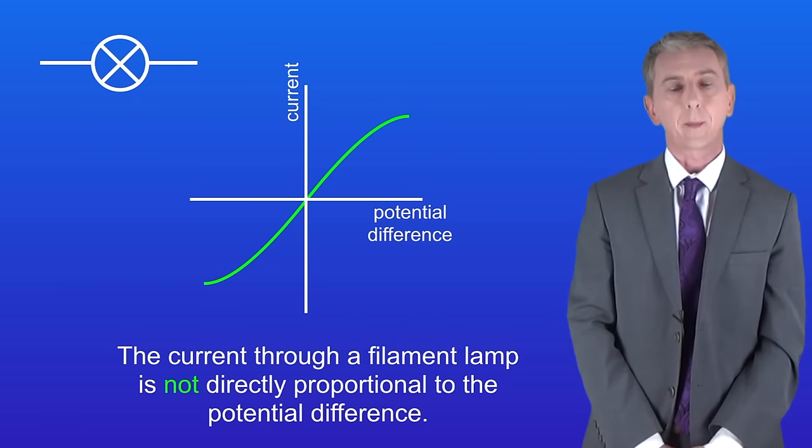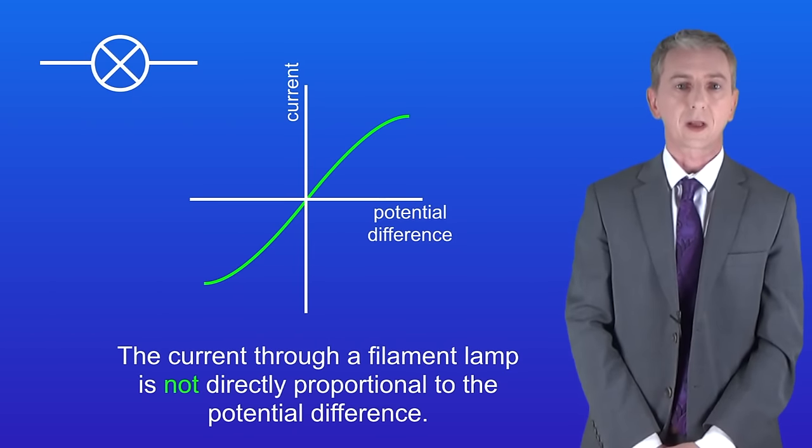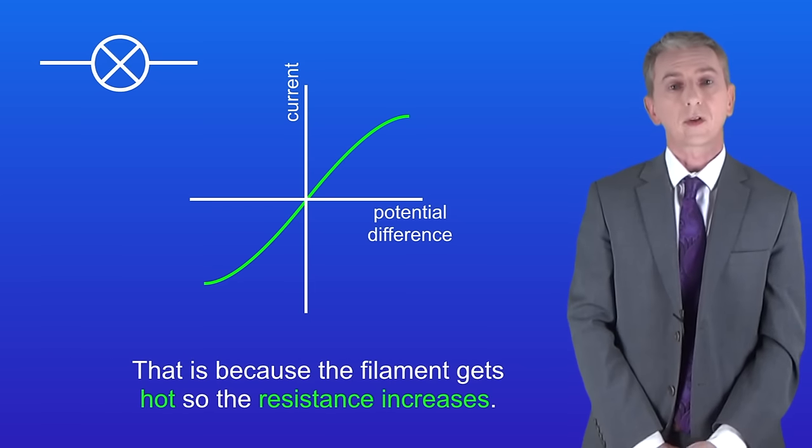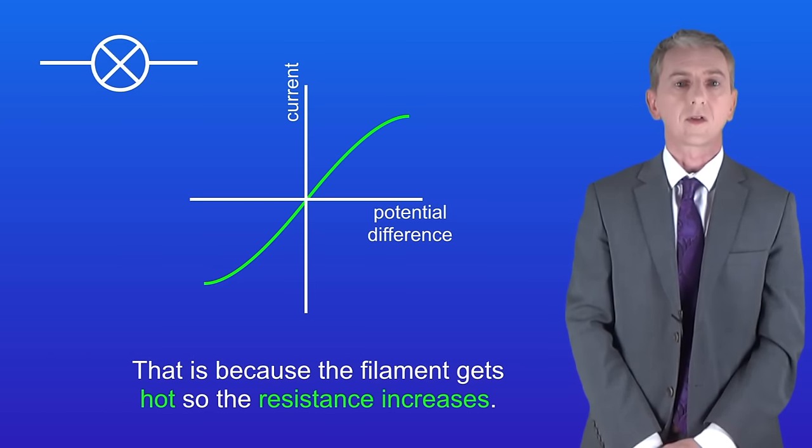However, the current through a filament lamp is not directly proportional to the potential difference, and that's because the filament gets hot, so the resistance increases.